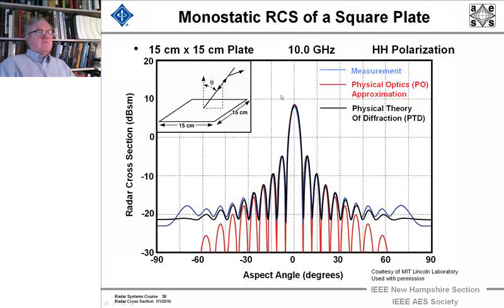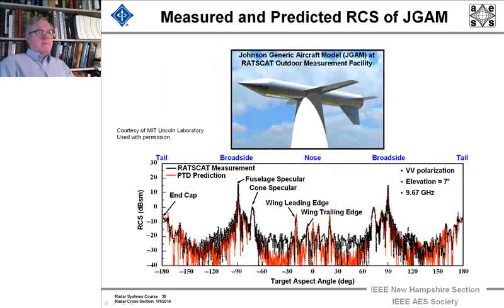So now let's look back at our famous 15 by 15 centimeter plate, 10 gigahertz polarization. Here we have the measurement and it looks, I'm color blind, this could be either purple or blue. It's probably just blue. And in black we've got the physical theory of diffraction which gives quite good agreement. And of course we have the physical optics approximation all by itself. So you can see that adding in the physical theory of diffraction gives us a much more accurate estimate of the calculated radar cross section with that square plate.